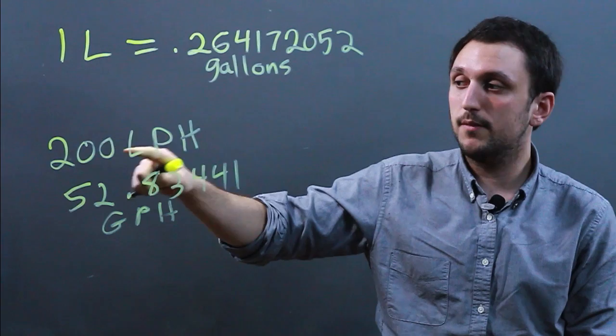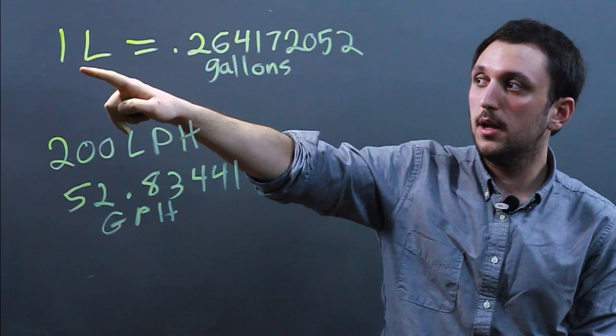So if you have any number of liters per hour, make sure you have this conversion set up first, and then you just multiply this number by, say 200, and this number by 200.